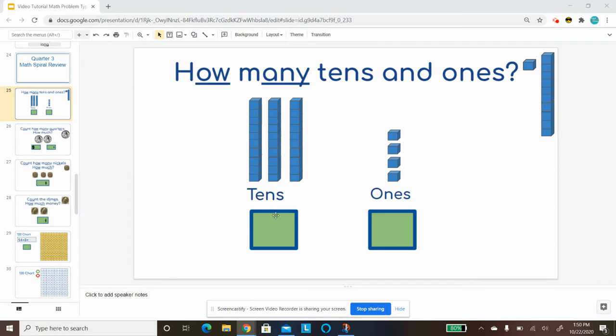So first I'm going to look and I'm going to count my tens. And I have one, two, three tens. So I'm going to put the number three. And I have one, two, three, four ones. And so I'm going to put the number four. So when I look at this, this is going to be the number 34.